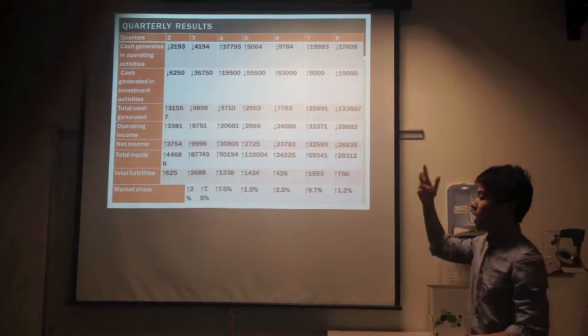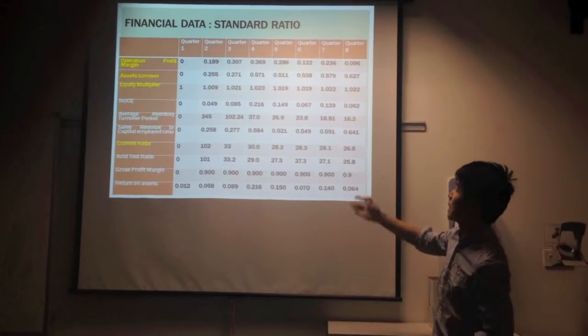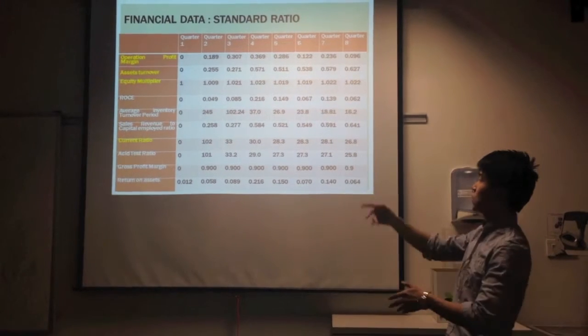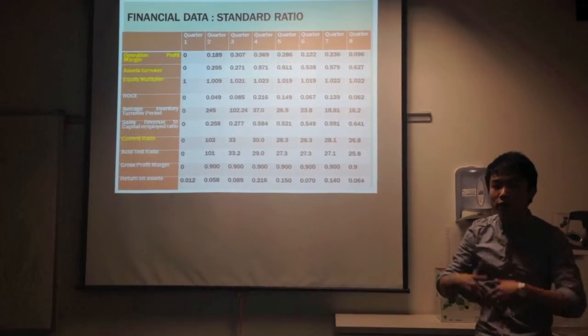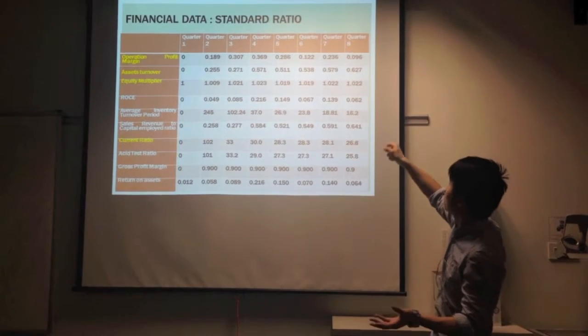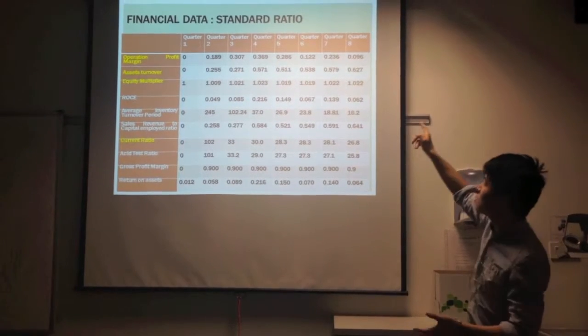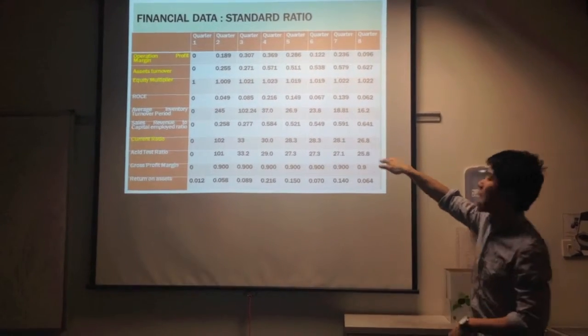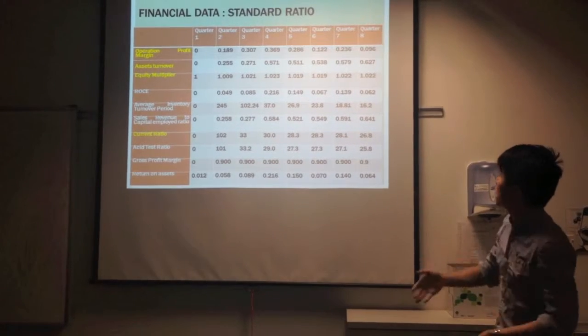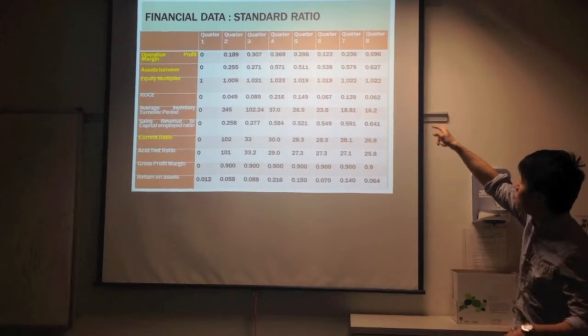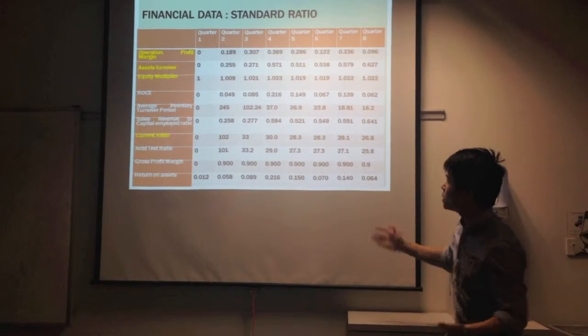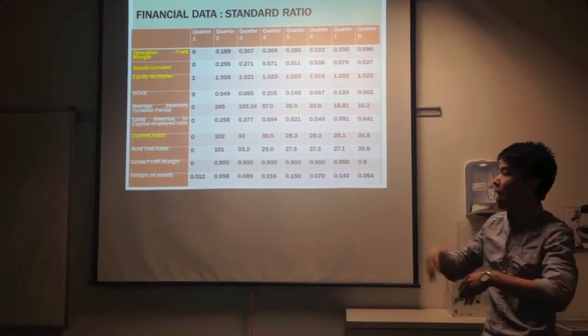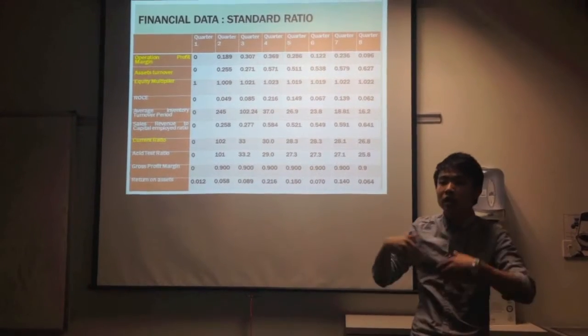Now we'll look at the financial data. You can see our revenue is very high, reaching 457% in quarter seven. However, the operating profit margin is very low, remaining around 20%, 12%, 10%, and even dropping to 9% in the last quarter. In contrast, our equity multiplier remained around one point, which means we have less debt but also little leverage in our business.